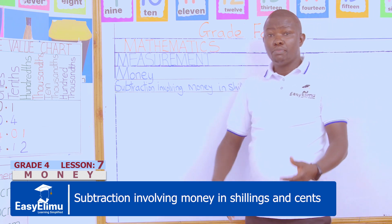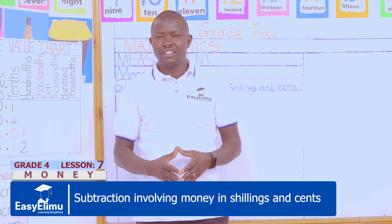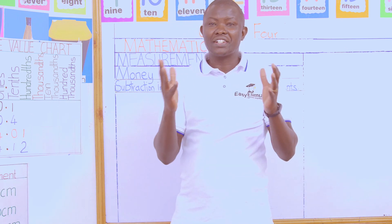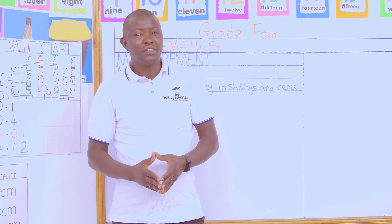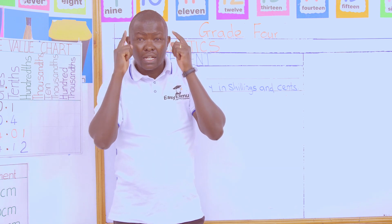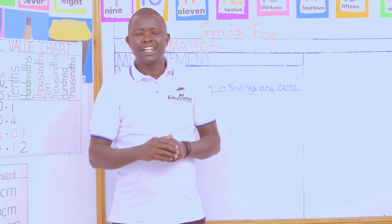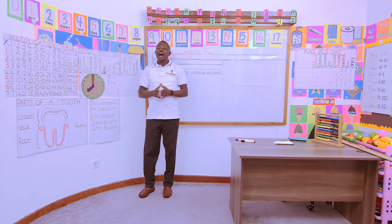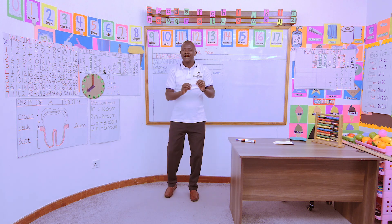Before we do this, let us remind ourselves of how we did addition. When we are doing addition, there were two main things. Victor, remind us: one shilling is equivalent to 100 cents — that was very key. Another thing, Tom: alignment of digits is very key when you are doing addition. And the last one was regrouping where possible.